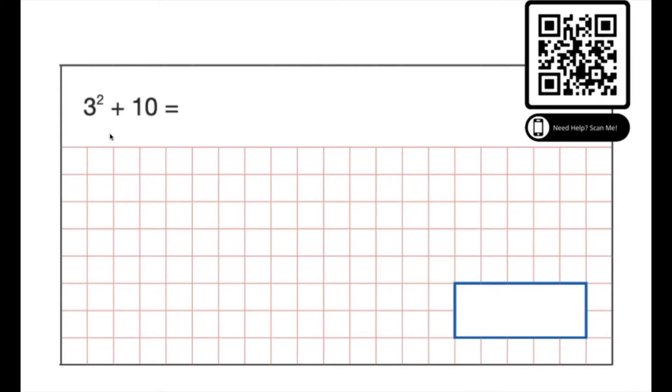Okay the next one, nice and simple. We've got a power here and then an addition, so we do the power first. Three squared is three times three which is 9. 9 plus 10, don't really need to do any working out for that one, the answer is 19.